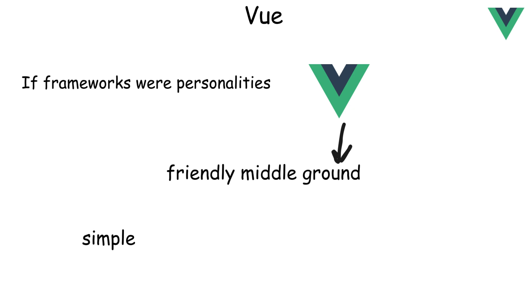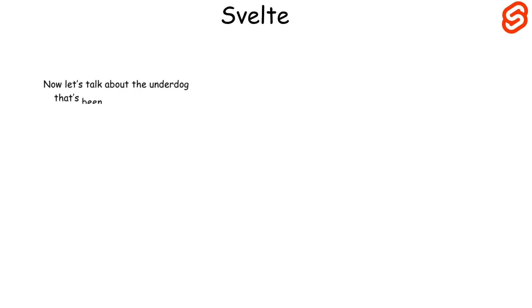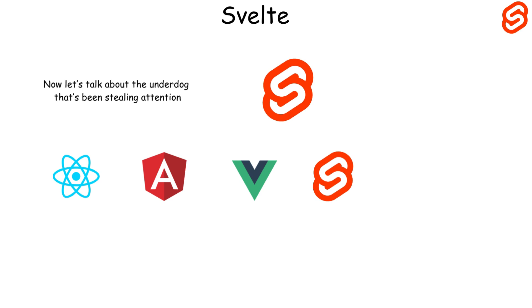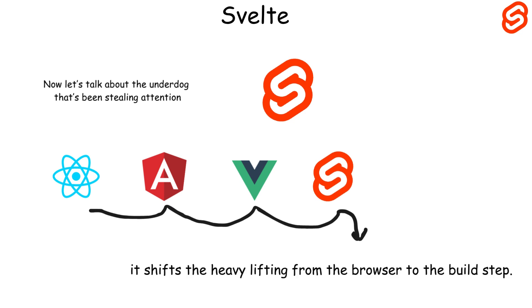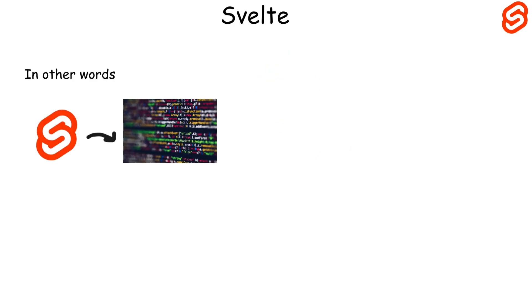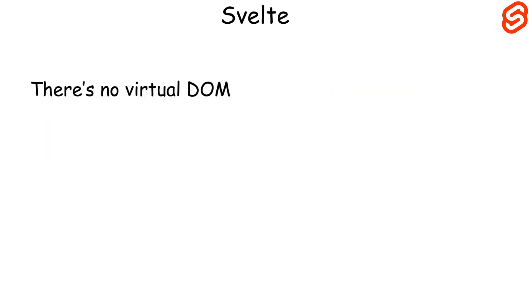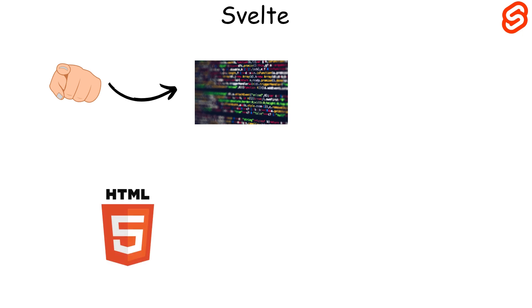Now let's talk about the underdog that's been stealing attention: Svelte. Unlike React, Angular, or Vue, Svelte does something bold — it shifts the heavy lifting from the browser to the build step. Svelte compiles your code at build time, meaning your app runs faster and uses less JavaScript once deployed. There's no virtual DOM, no runtime overhead. The syntax is super clean — you write code that looks like plain HTML, CSS, and JavaScript.